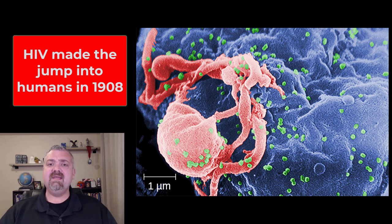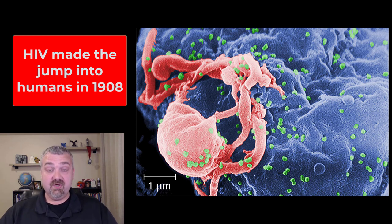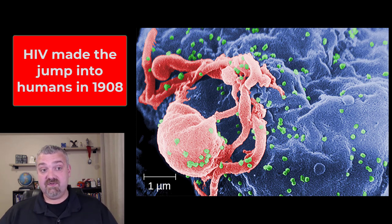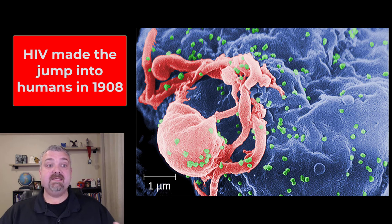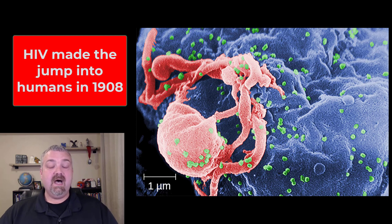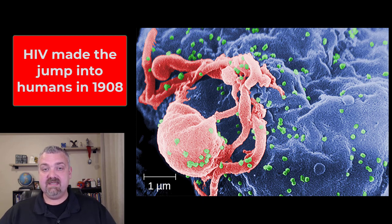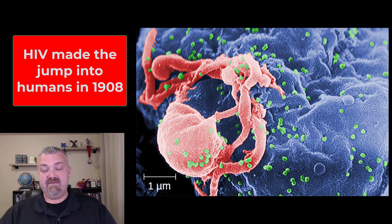Sometime in the early 1900s, around 1908, SIV started to jump into the human population, which makes it a zoonosis — an animal disease that can infect humans. For who knows how long, SIV was a problem in simians, in chimps, but it jumped into the human population in the early 1900s. How? It appears from eating bushmeat. It wasn't humans having sex with animals — it was the consumption of bushmeat. Eating these animals is how the virus got into the human population, at least that's the best guess.